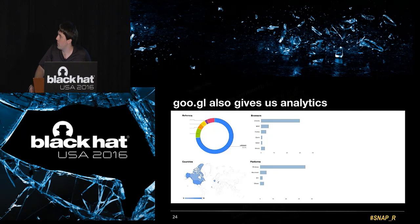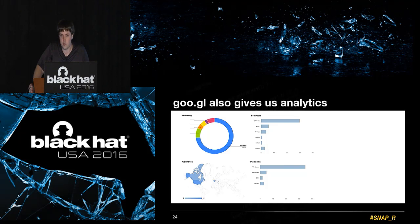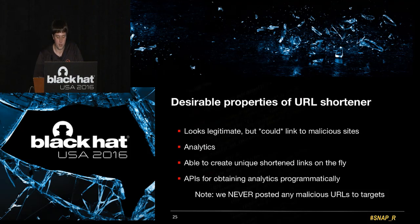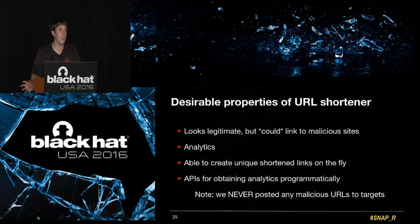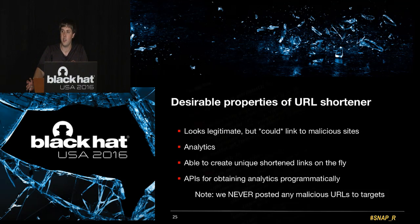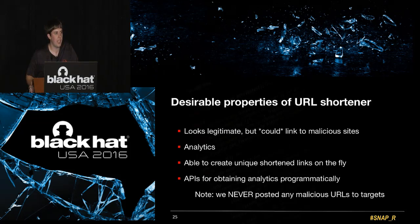goo.gl also gives us analytics — it tells us what referrers actually clicked on the link, what countries they're from, the different browsers like Chrome or Safari, and even the platforms. We can tell if somebody clicked using an iPhone versus Android versus Windows. These are all desirable properties of a URL shortener. goo.gl looks legitimate — people see a goo.gl link and won't think it looks fishy, because it's from Google. But we just demonstrated that goo.gl can link to malicious sites. We want to emphasize we never actually posted malicious links on anyone's profile — we only used things like Google.com as our spear phishing payloads in our tests.